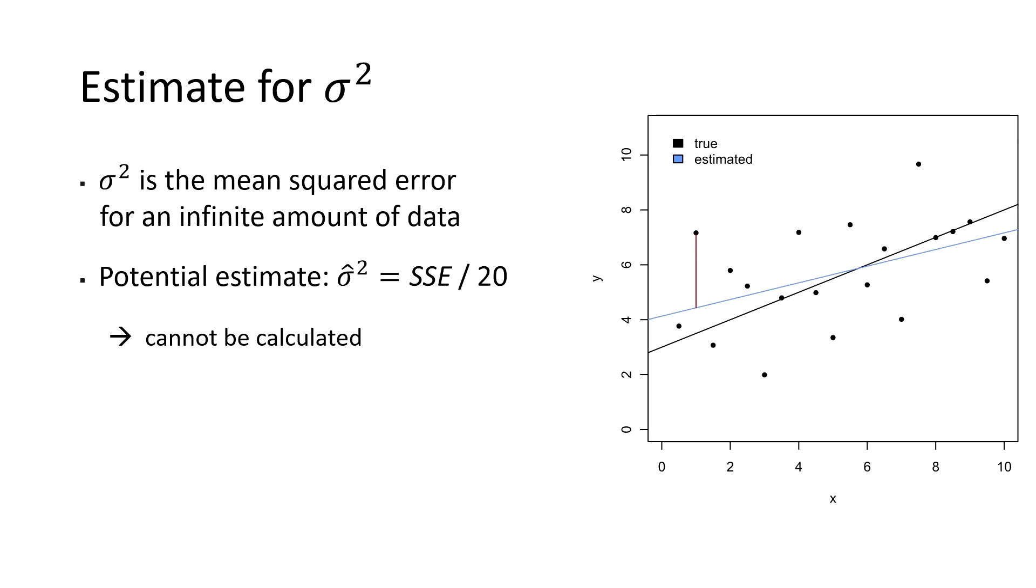Instead of the unknown true squared errors, we could now go ahead and calculate the squared residuals. The mean sum of squared residuals could then be used as an estimate for the variance. However, it turns out that this formula would systematically underestimate the variance, because the squared residuals are on average smaller than the true squared errors. This results from the fact that the blue line was estimated such that the sum of squared residuals is minimized. To account for this systematic bias, we don't divide by the full number of observations, but rather by the number of observations minus the number of model parameters. In this case, we have the parameters beta0 and beta1, so we divide by 20 minus 2. This leads to an unbiased estimate.